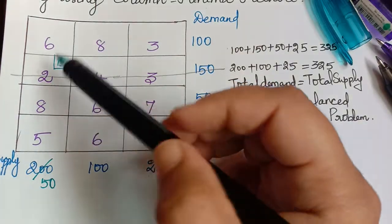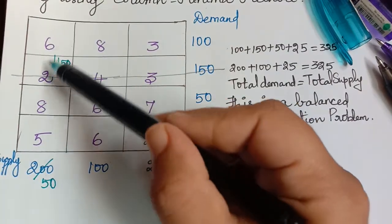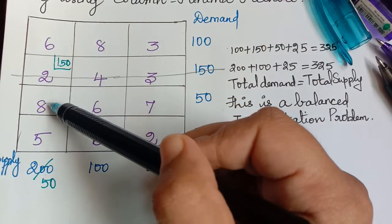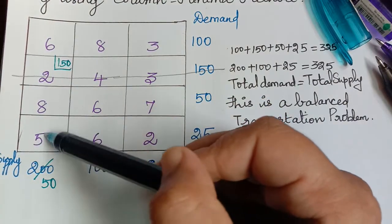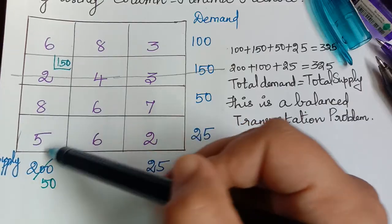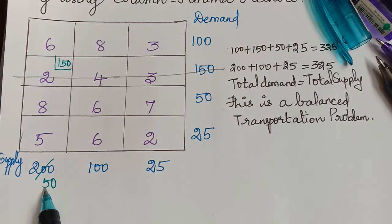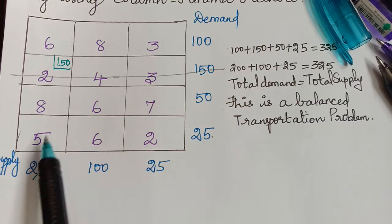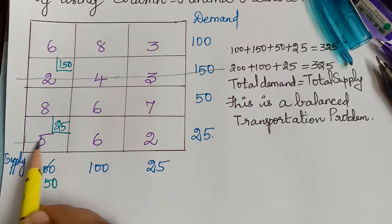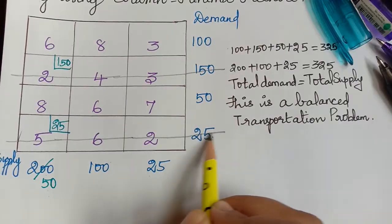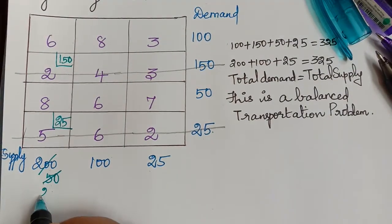Next, we check the first column for any remaining cells. Only one cell has been struck off, leaving three cells. We choose the minimum of the remaining values: 6, 8, and 5, so the least value is 5. We make an allocation for this cell. The demand is 25 and the supply is 50, so the minimum is 25. We allocate 25, strike off that row, and subtract 25 from 50, leaving a remaining supply of 25.